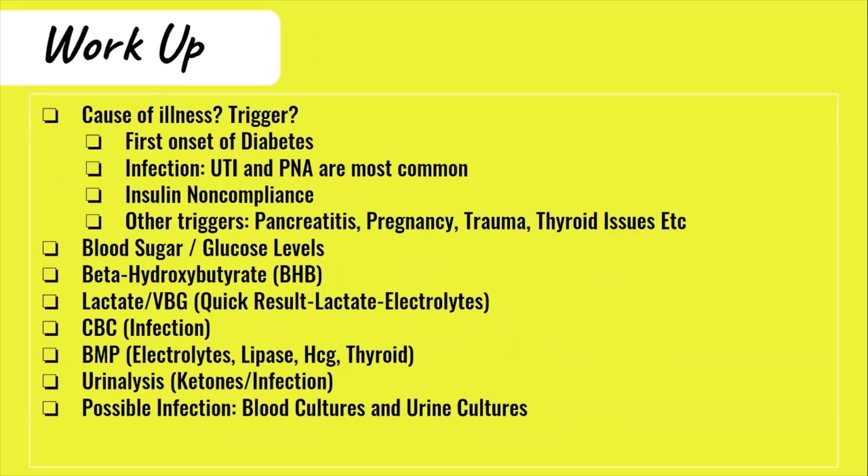Now for the workup — what is going to be ordered. First, we need to figure out what led the patient to developing DKA. Is it new onset type 1 diabetes, or did an infection throw everything out of whack? Did the patient not take their insulin as prescribed, or was it a different stressor like pregnancy, pancreatitis, trauma, or a thyroid issue? The list goes on.